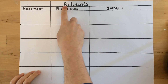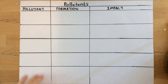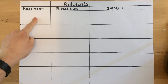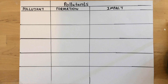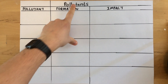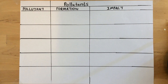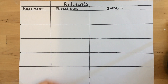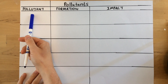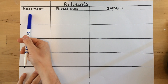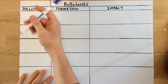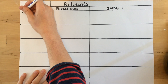Today I'm going to talk to you about pollutants. We're going to have a look at five different pollutants, how they're formed and the impact that they can have on the environment. Whenever we burn hydrocarbons, such as fuels, we produce pollutants.